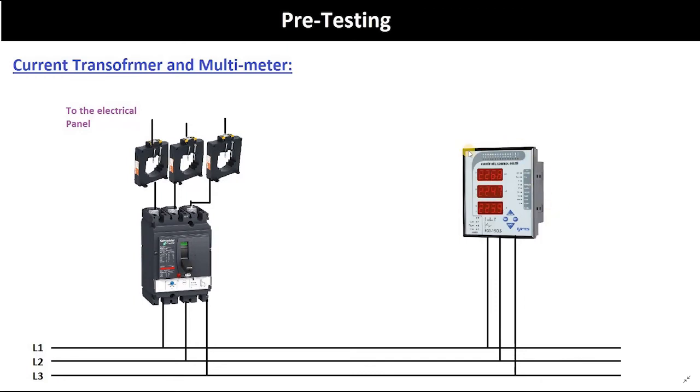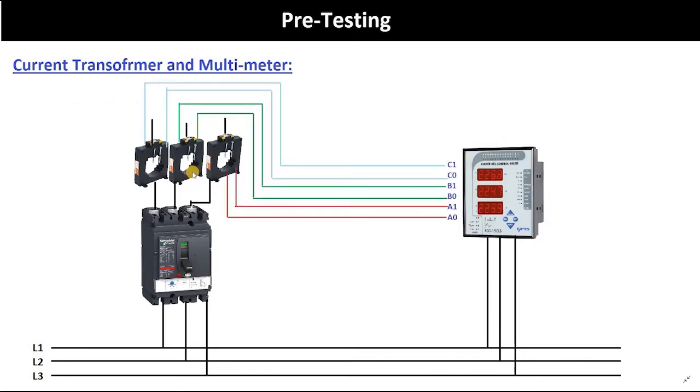Now your multimeter will also be connected to the three phases. Each one of these current transformers contains two wires and they will go to this analyzer or the multimeter here and then it's going to display the phase-to-phase voltage or the phase-to-neutral voltage. So it's very simple.